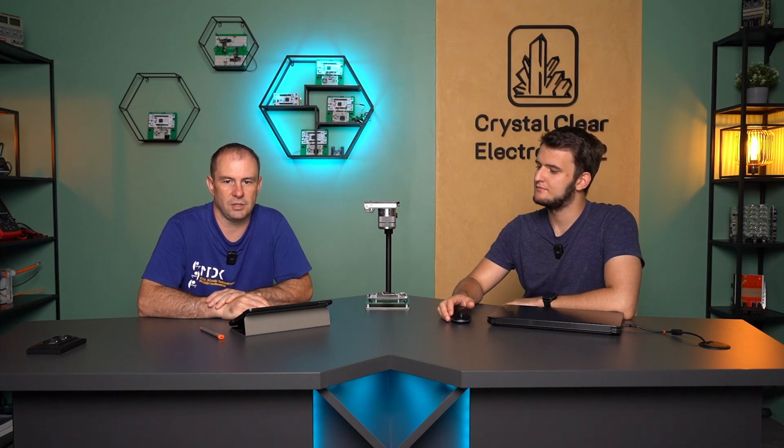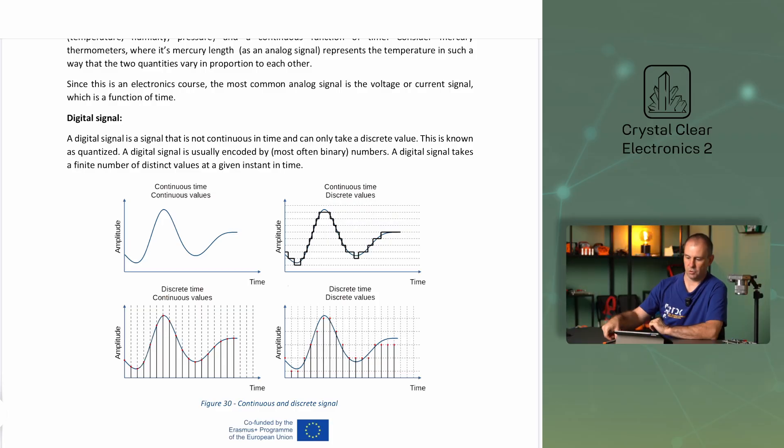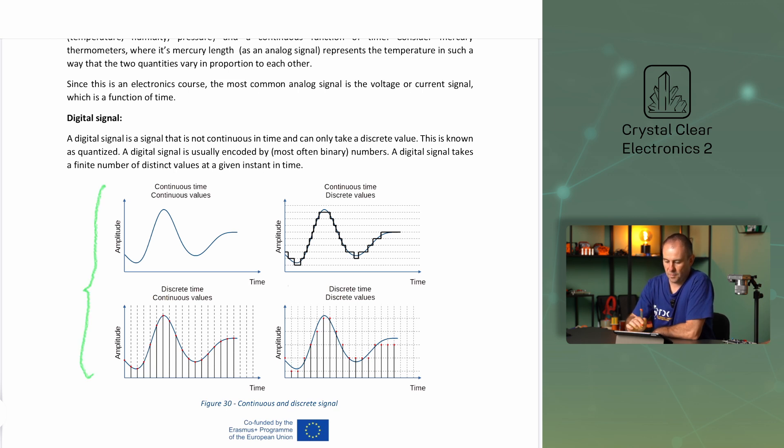And how would you define the term digital signal? A digital signal is a signal that is not continuous in time and can only take a discrete value. This is known as quantized. A digital signal is usually encoded by numbers, most often in binary form. A digital signal takes a finite number of distinct values at a given instant in time. The figure in the curriculum shows four examples of signals with discrete or continuous values in continuous time or discrete time.